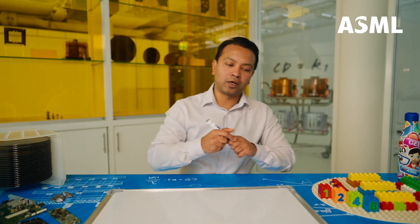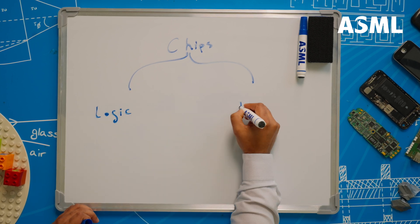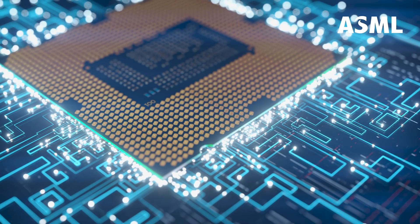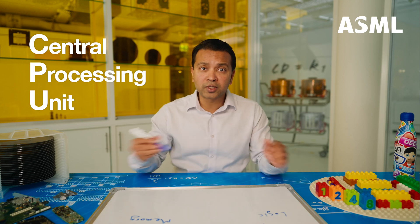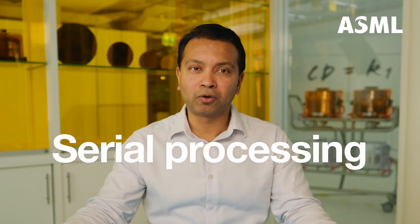The most common digital chip families are logic and memory. Logic chips are the brains of electronic devices. They execute the commands and processes needed for your computer to run properly. Within the logic chip family, CPUs, or central processing units, are the original chips. First designed in the 1960s, the CPU excels at running individual tasks and getting those done quickly, one after the other — that is, in serial order.